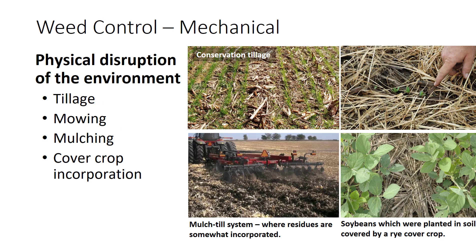Mechanical weed control involves physically disrupting the environment around the weeds. This can be accomplished by using tillage to disrupt vegetative and seed reproduction, using cultivation or rotary hoeing to kill emerged weeds, mowing weeds to cut off reproductive structures and/or decrease food storage and energy reserves, and mulching to inhibit germination of weed seeds. Tillage of agricultural land targets the weed seed bank and often reduces weed seedling emergence due to seed burial or early germination in adverse conditions. In more recent years, however, the adoption of conservation tillage has reduced the dependency on tillage. In these reduced tillage systems, increased weed seed mortality may also be achieved by allowing weed seed to remain exposed and vulnerable to greater predation. In either instance, the agricultural practice effectively modifies characteristics of weed population dynamics in order to reduce the weed population within a region.